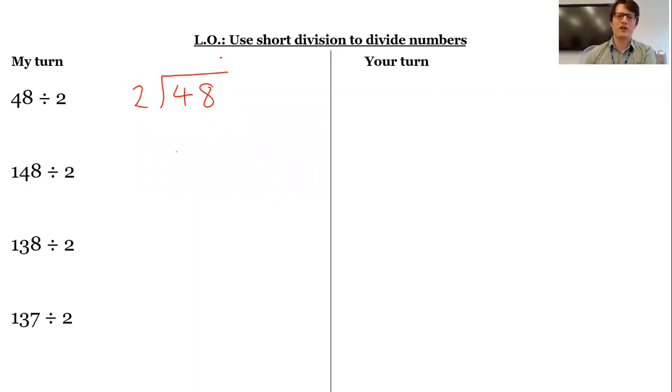Now what I'm asking myself at each step is how many groups of two are there in each part of this number? So I'm saying first of all, how many groups of two are there in four? Of course, really what I'm saying is how many twos are there in 40. But we're thinking about four for the moment.